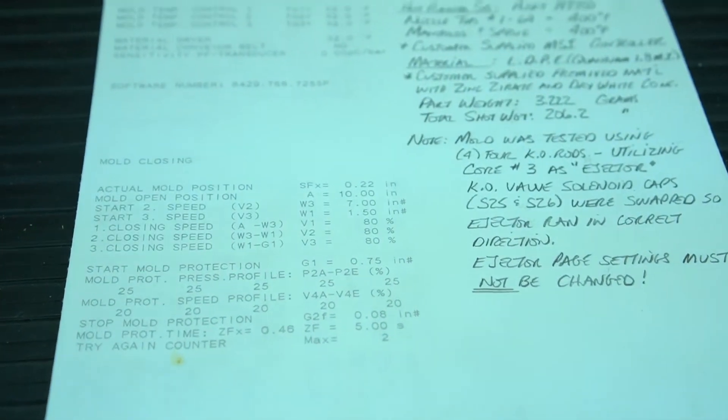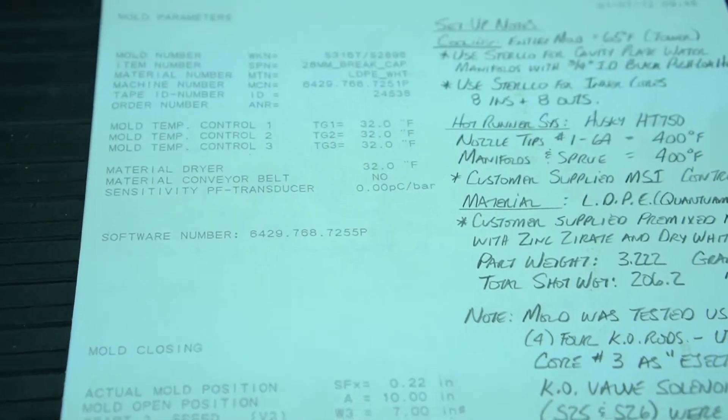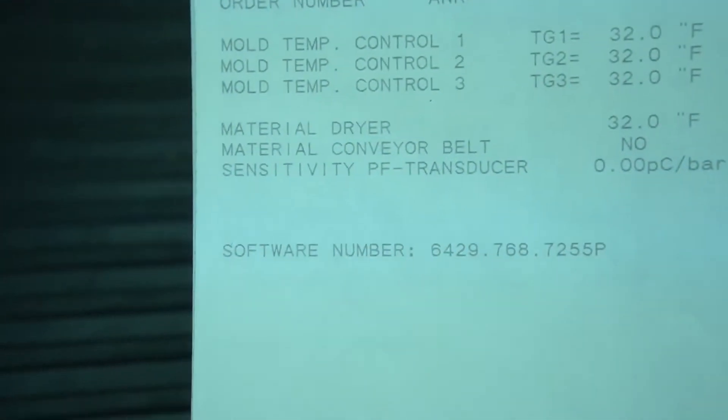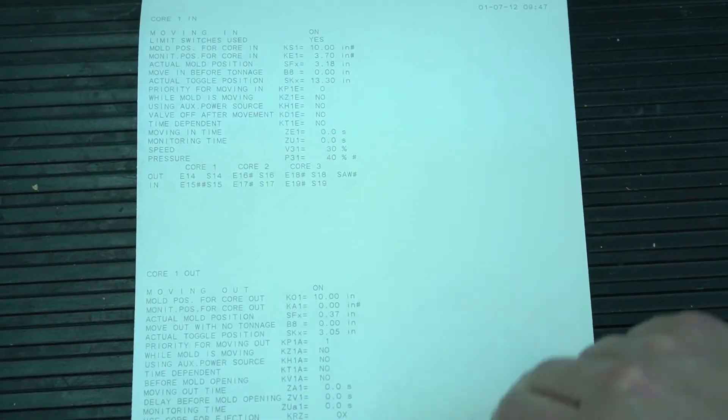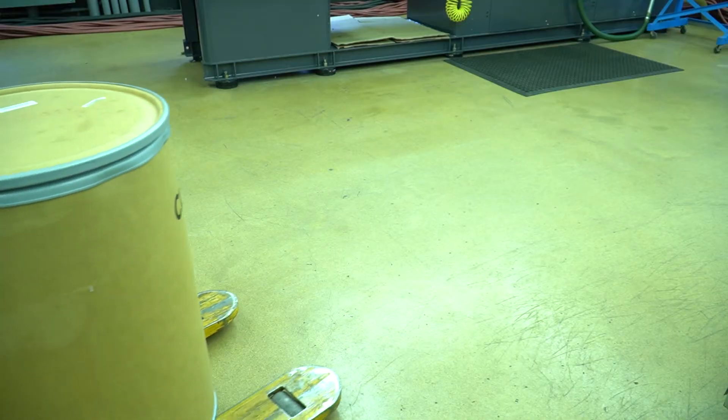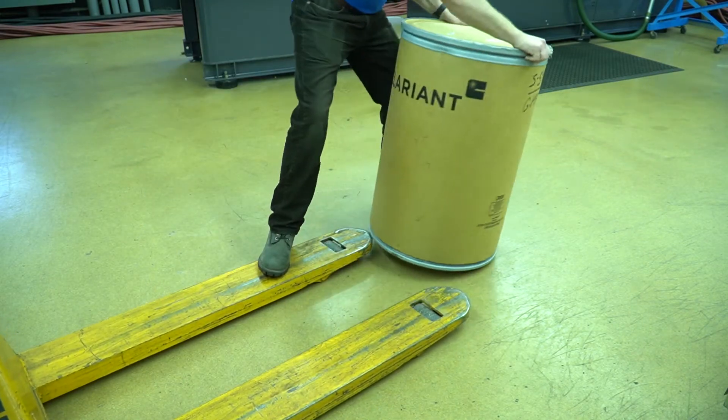The process sheet is followed to ensure that all mold parameters are followed correctly, including barrel heat and water temperatures, injection pressure, clamp force, and cycle time, to name a few. The process is specific and must be followed accordingly.